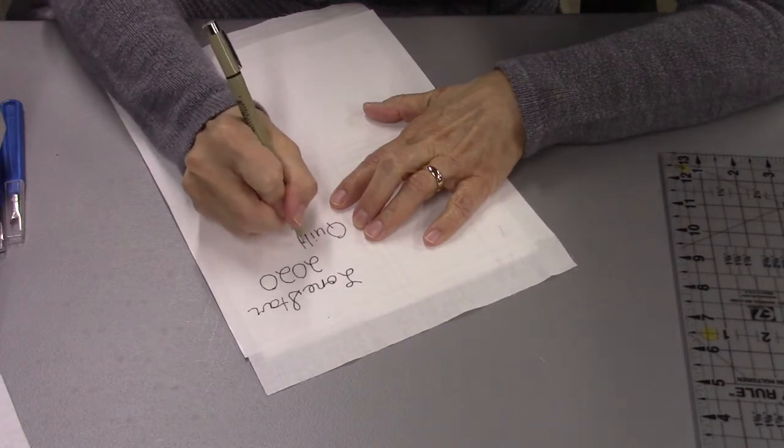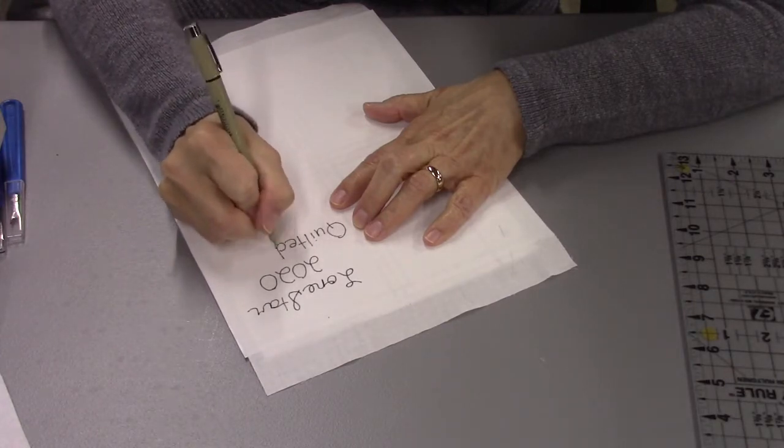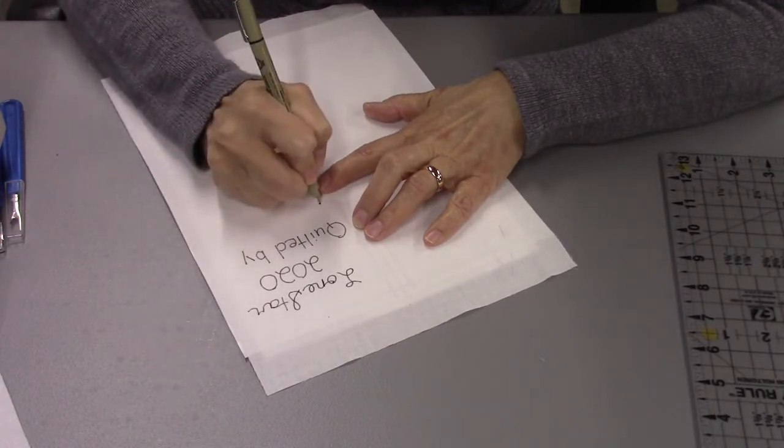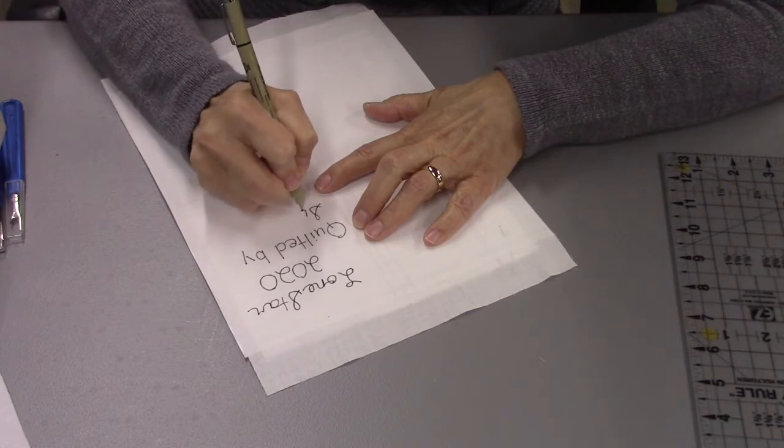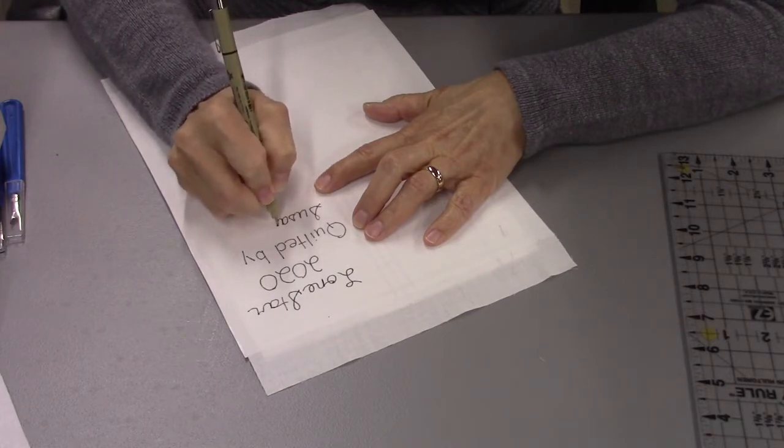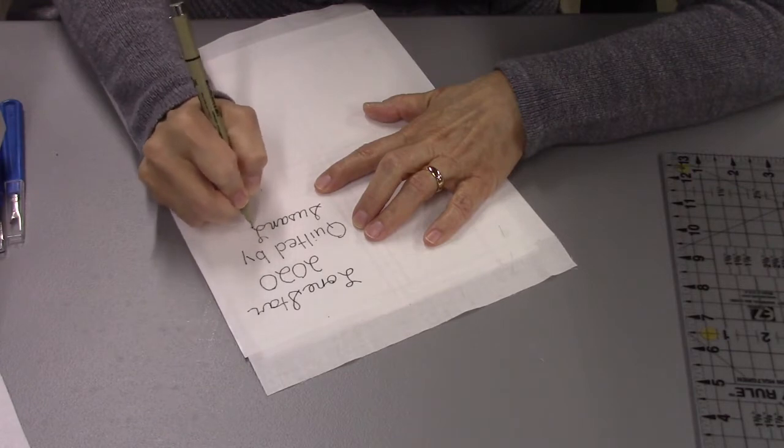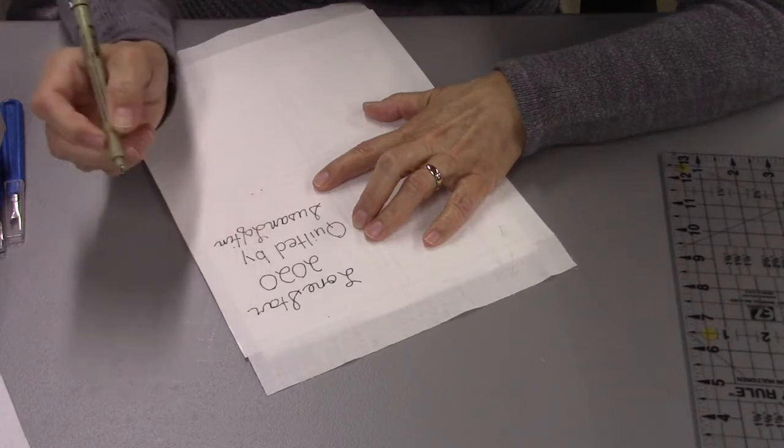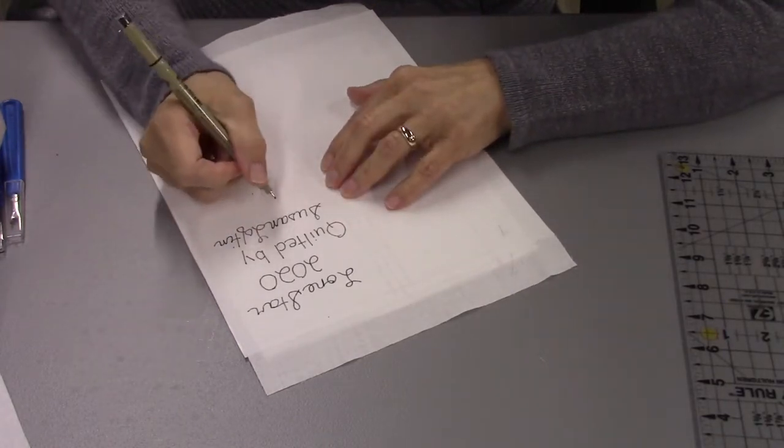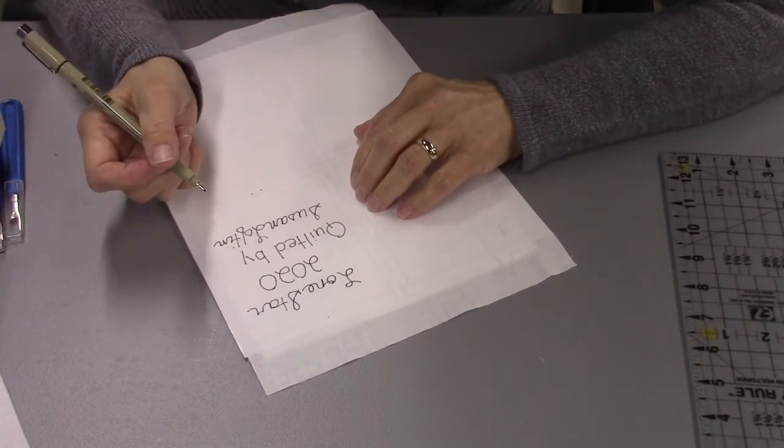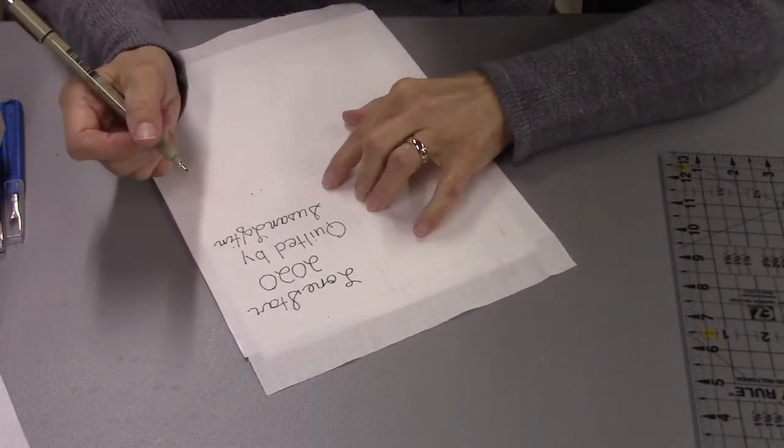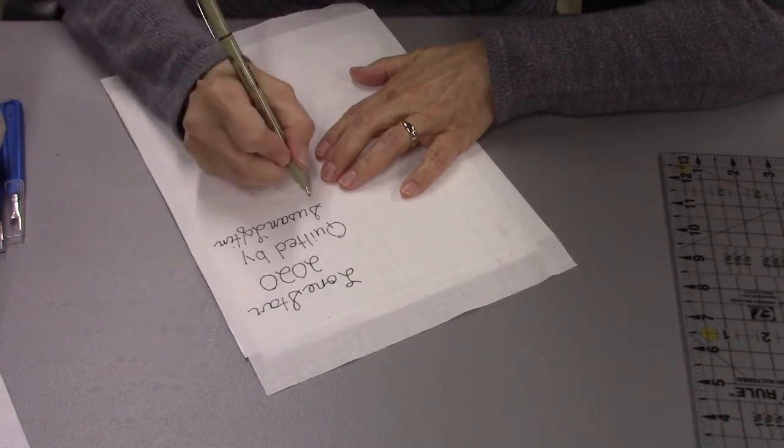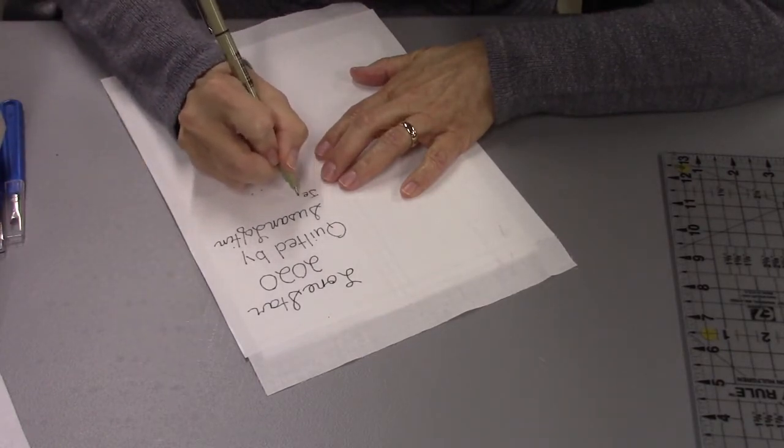I'm going to go ahead and print this information and then write my name. Then you can write anything else you want. You need to make this smaller than what I'm doing - I'm making this label pretty big. I usually put the city where I'm living at the time because I have moved around.